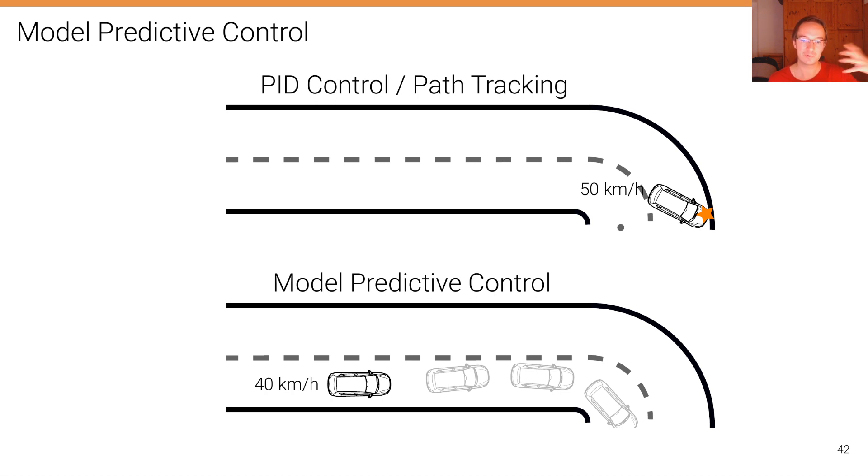Because we are calculating into the future, we are rolling out our vehicle model. We can follow theoretically and hypothesize the trajectory into the future, so we know already at this point we need to decelerate in order to actually make that right turn here.